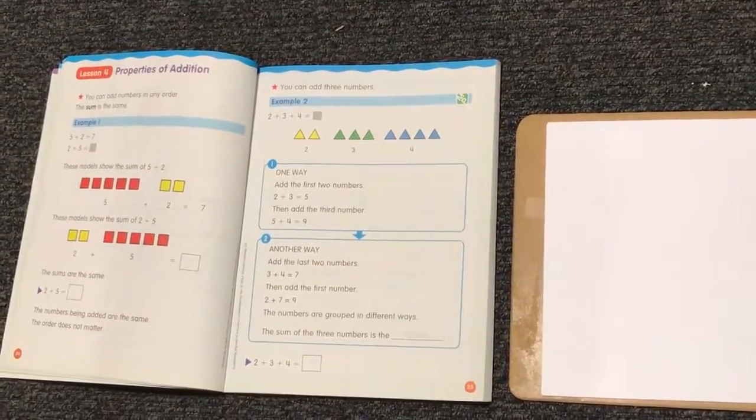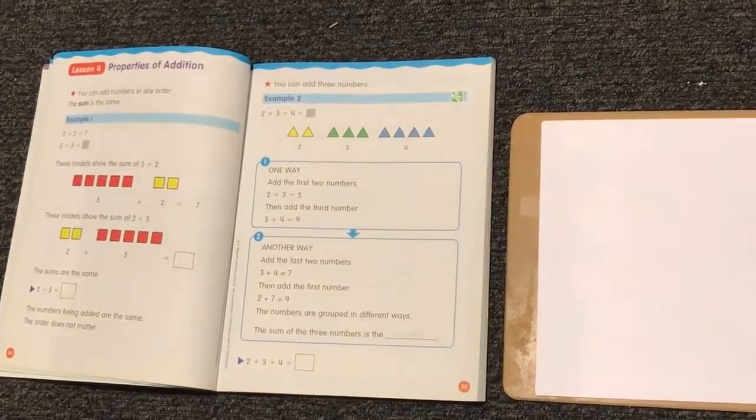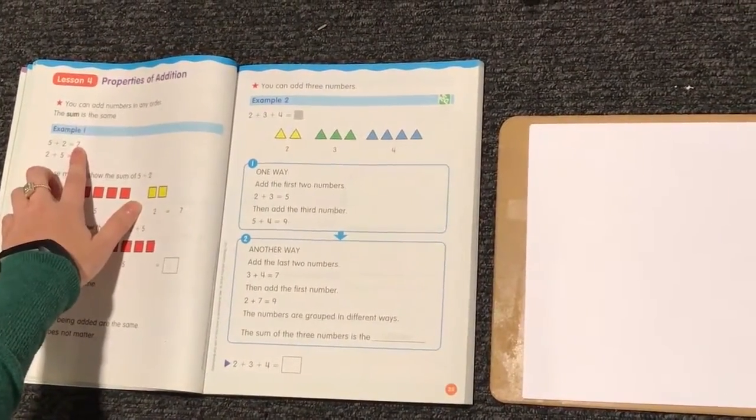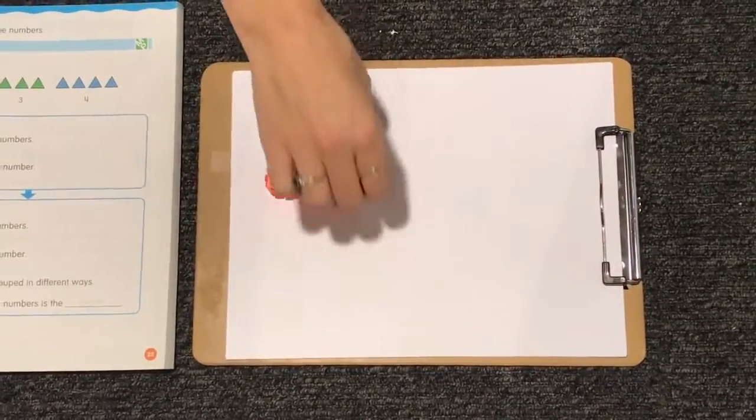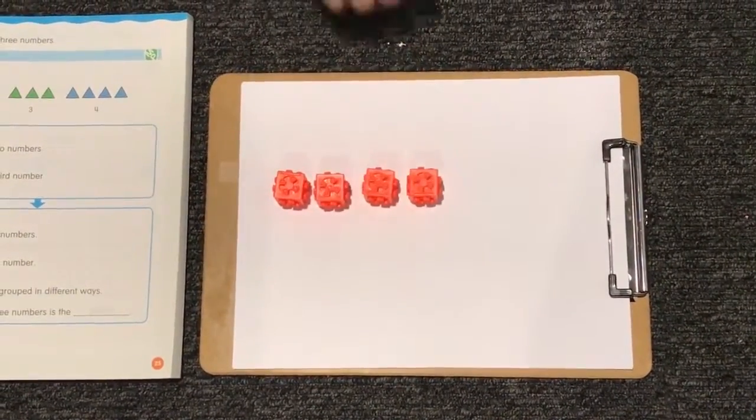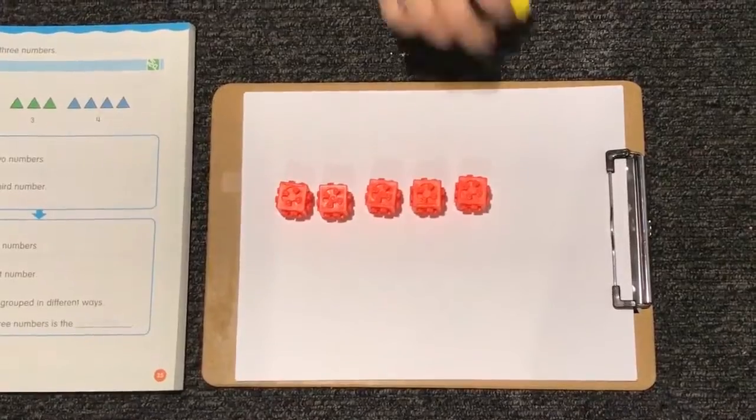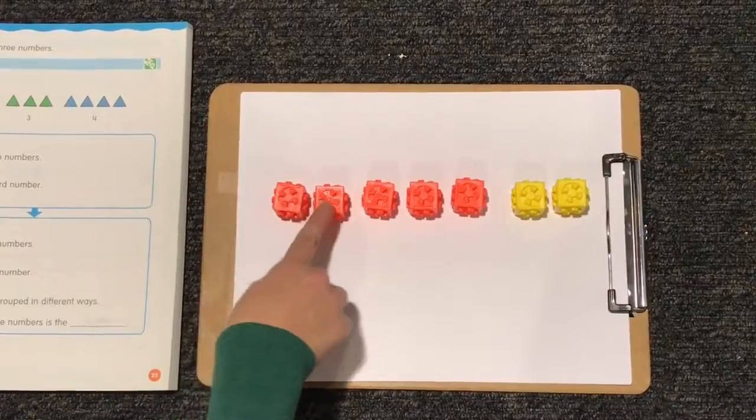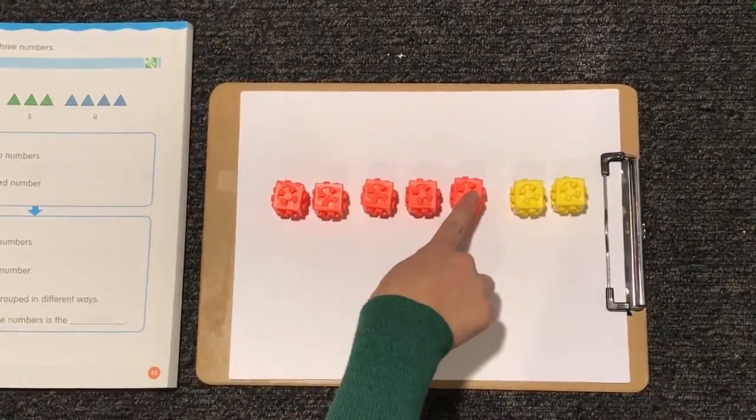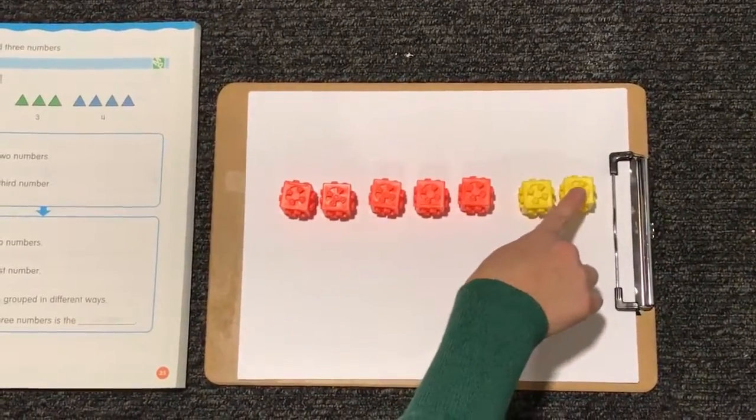So for our first example, we have 5 plus 2 equals 7. So let's show that. 1, 2, 3, 4, 5, plus 1, 2 equals 7. 1, 2, 3, 4, 5, 6, 7.